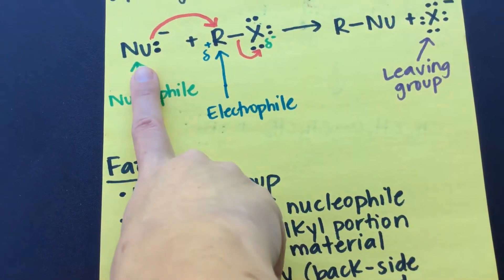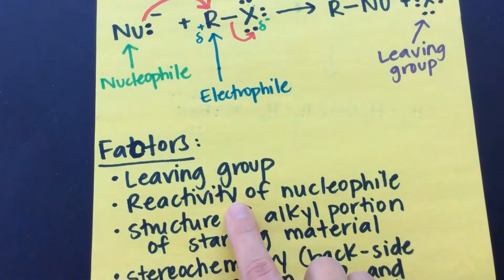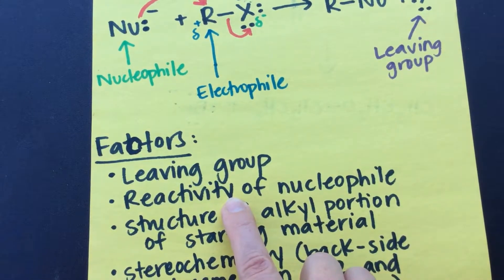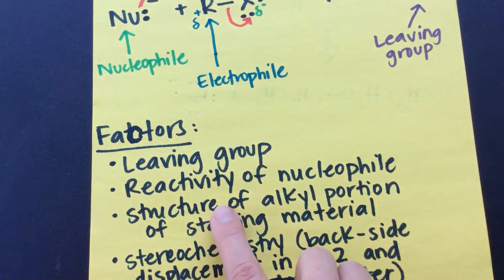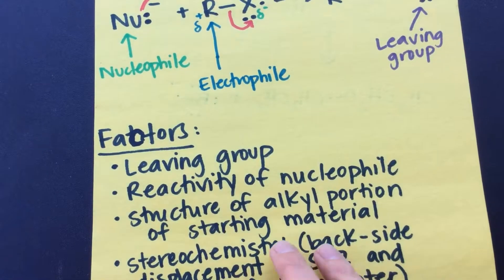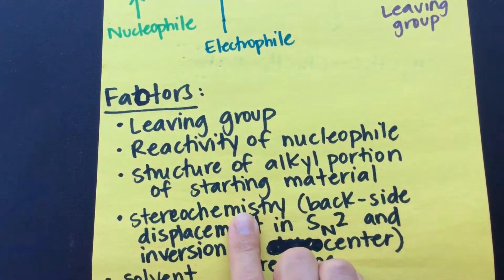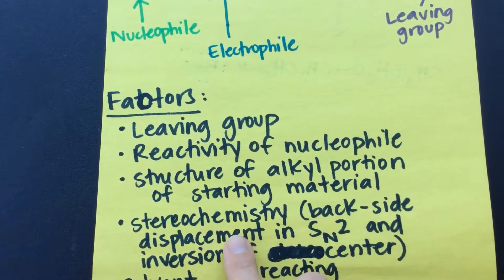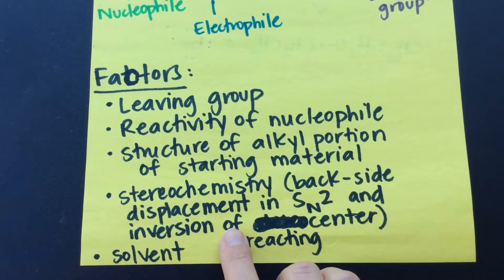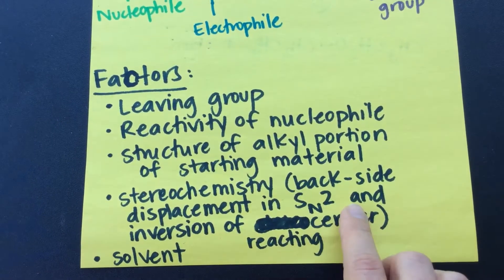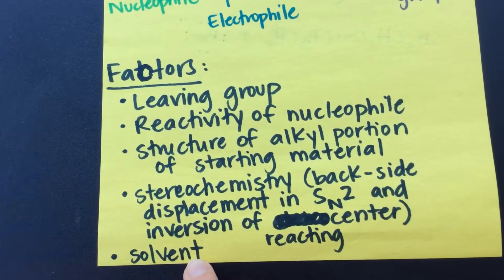The reactivity of the nucleophile itself, okay, that also strongly influences kinetics, as well as the structure of the alkyl portion of the substrate. Now, in terms of stereochemistry, we have what's called backside displacement, and that causes the inversion of the reacting center. And then there are solvent effects.